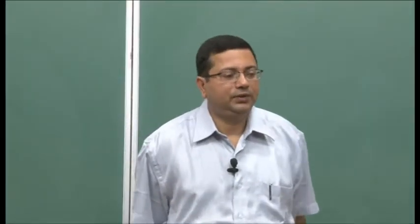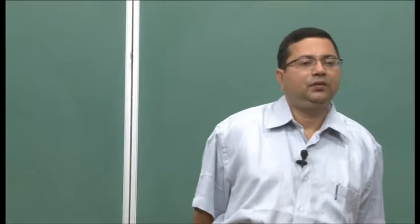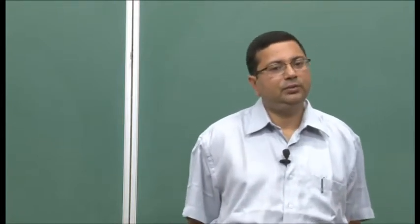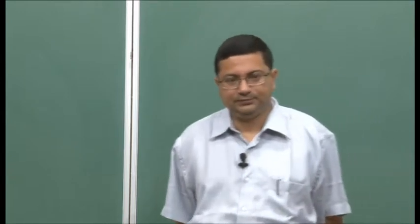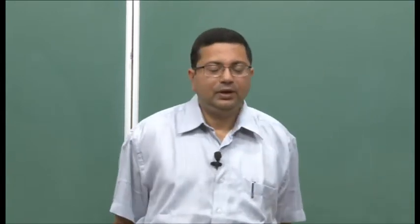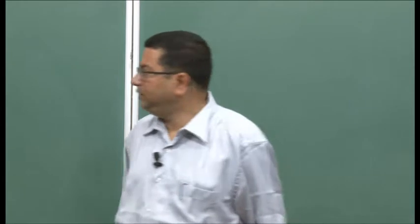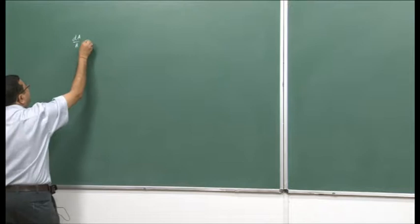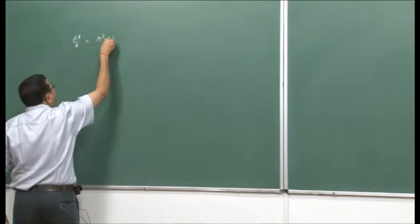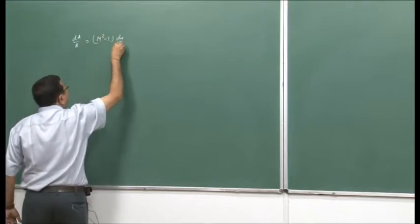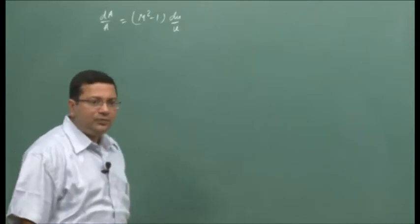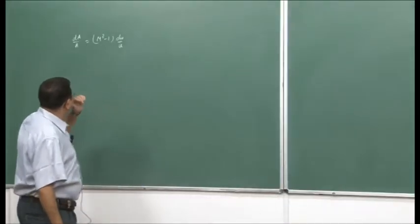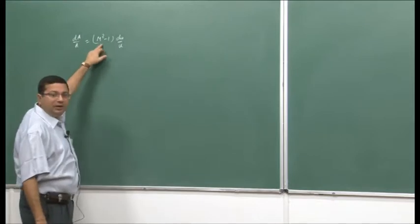Welcome back. In the last few lectures, we have been discussing the quasi-1D flow through variable area in ducts. We have derived the area-velocity relationship in the last class, which is dA/A equal to M² minus 1 times dU/U. After that, we have shown that there are 4 possibilities of Mach number variation.